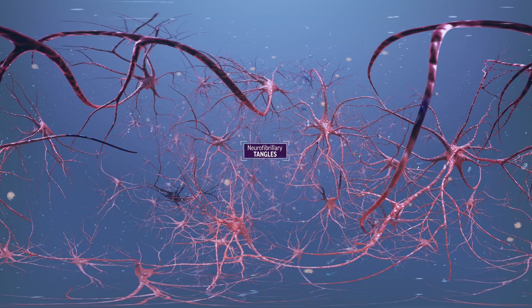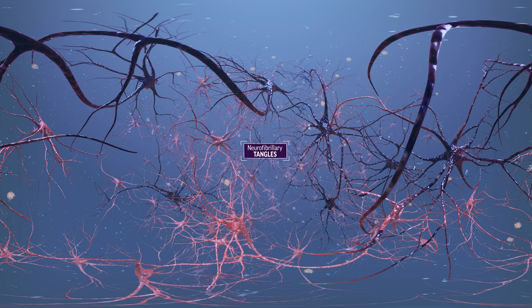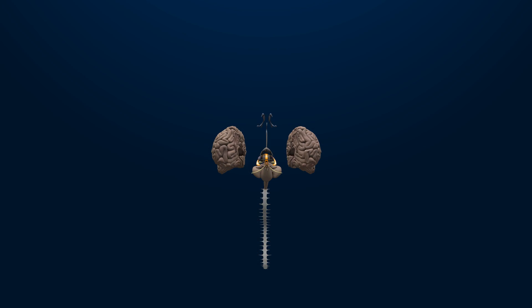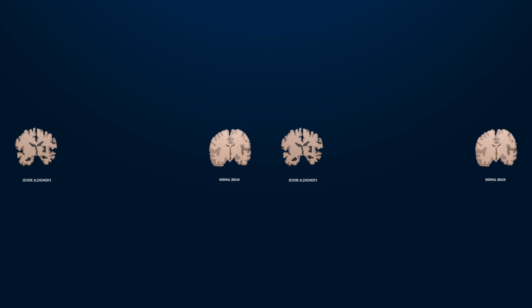Scientists believe these brain changes quietly brew for years before the first symptoms appear. They typically begin near memory-forming regions such as the hippocampus, but as the disease progresses, neurons die in other regions and the brain shrinks.